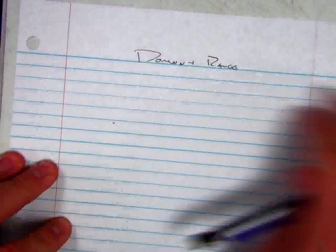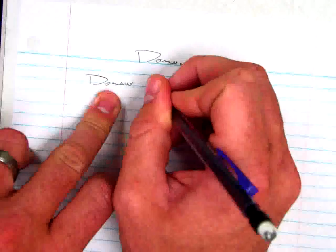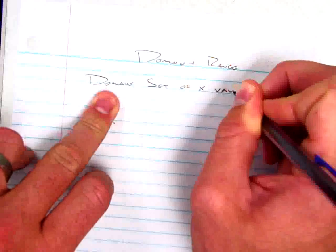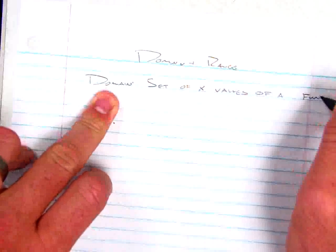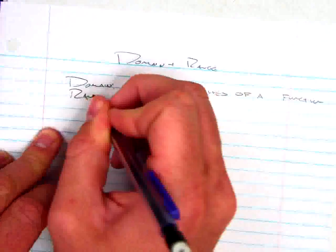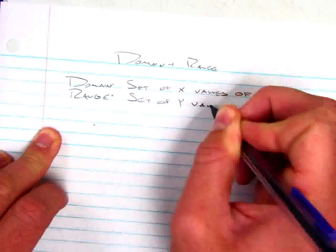Domain and range are basically two vocabulary words, and I'll just give you a brief synopsis, then we'll look at some examples. Domain is basically the whole set of x values of a function, and the range is your set of y values for the function.